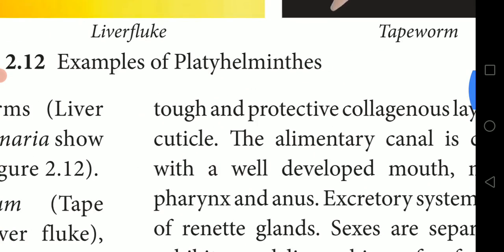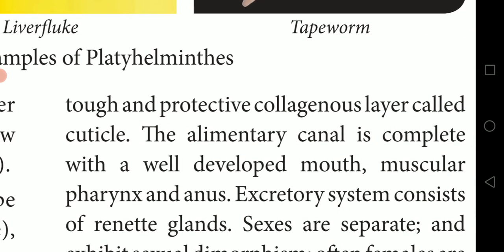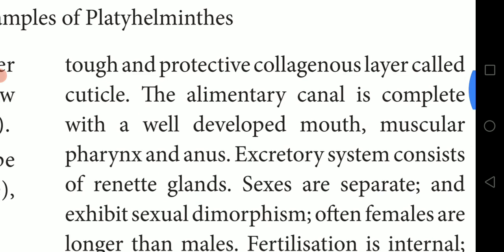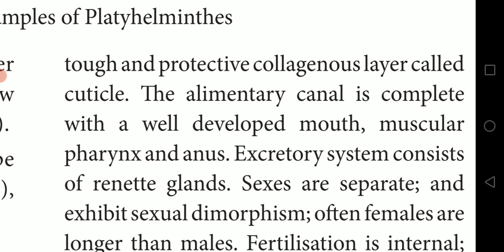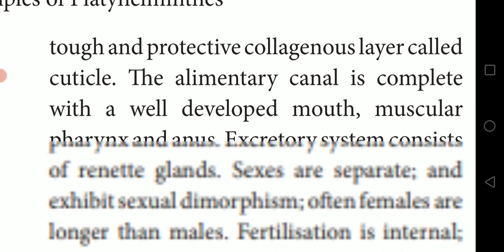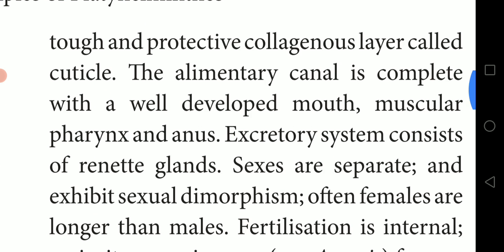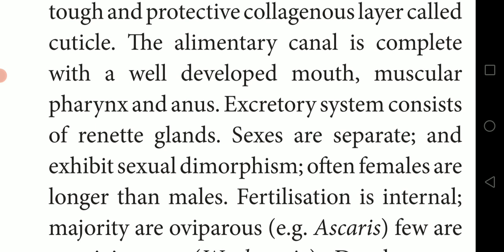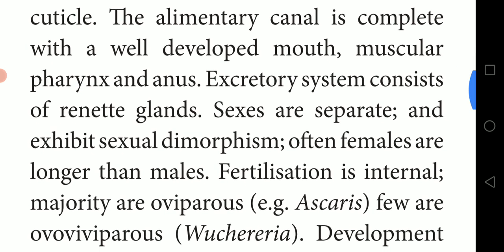They have a tough and protective collagenous layer called a cuticle. The alimentary canal is complete with a well-developed mouth, muscular pharynx, and anus. The excretory system consists of renette glands — renette glands are present in Aschelminthes and serve as the excretory organs.